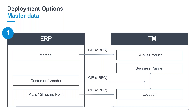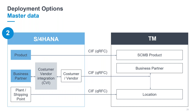Coming to some technical master data related information: in the first scenario, we know that the materials transfer, customer vendor transfer, and location transfer is done by the core interface — CIF — creating a product in TM, the business partner, and the locations. If we look at deployment option number two, where we use S4 HANA as our legacy system for the products, something has changed — we have to do a customer vendor integration, which is called CVI nowadays, which differentiates the business partner into customers and vendors, and then we CIF over to TM, getting the system parameters and objects transferred like the product, business partner, and location.